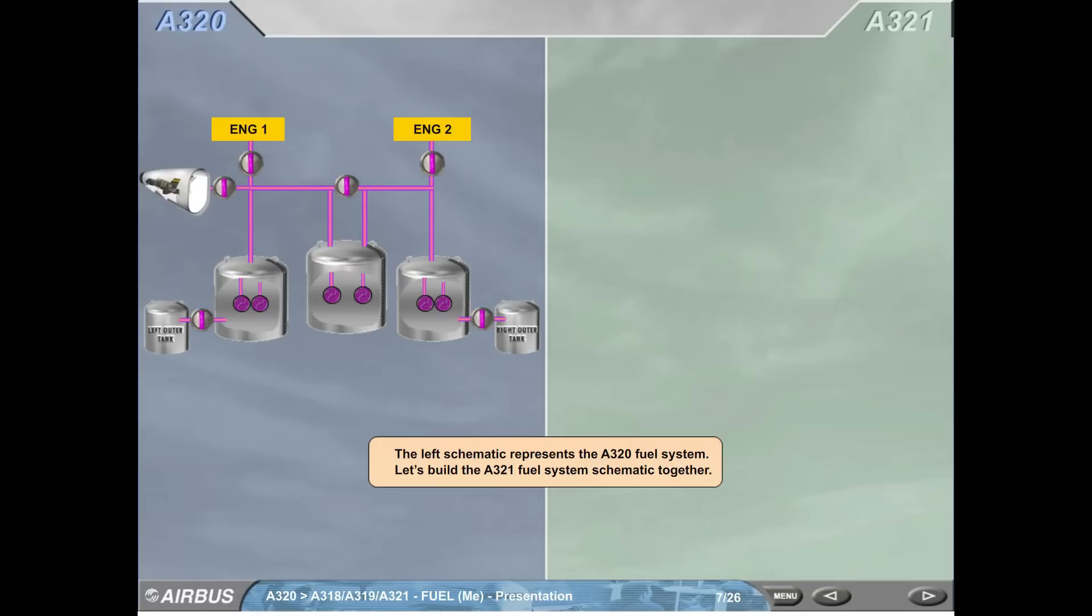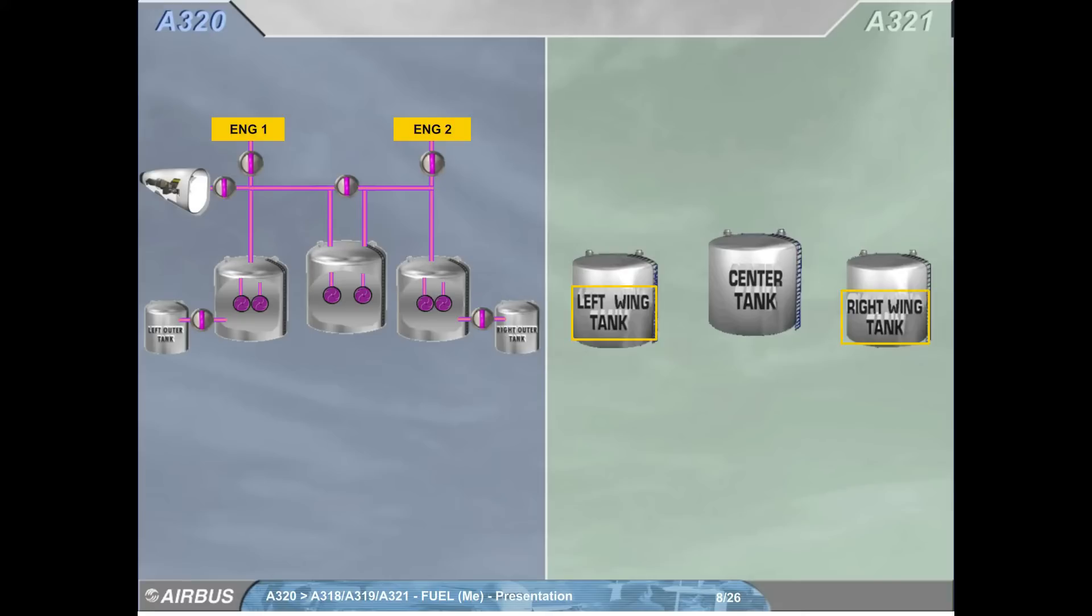The left schematic represents the A320 fuel system. Let's build the A321 fuel system schematic together. On the A321, there are no outer tanks. Therefore the tanks are simply called left and right wing tanks.